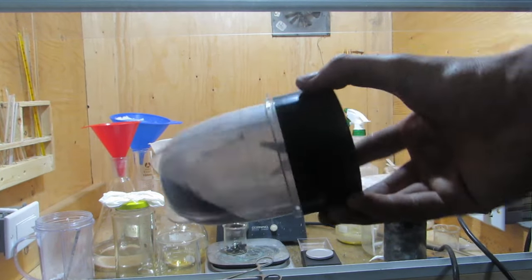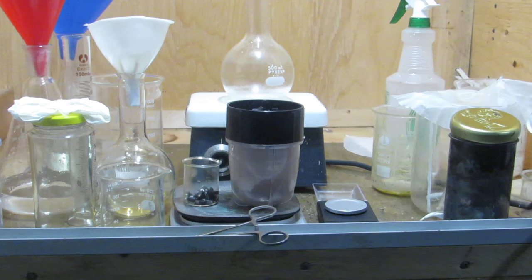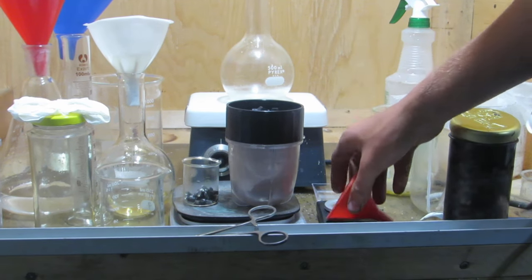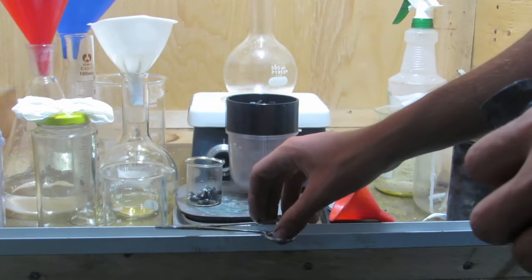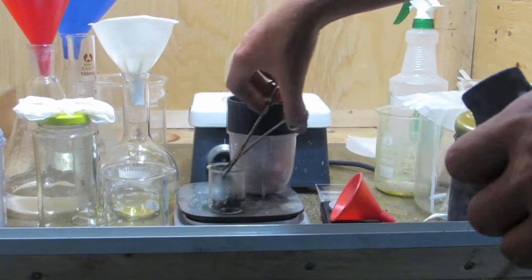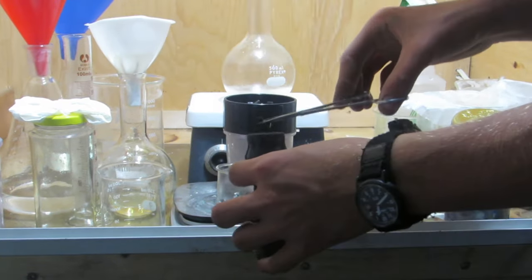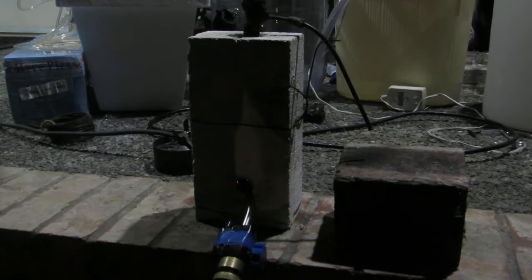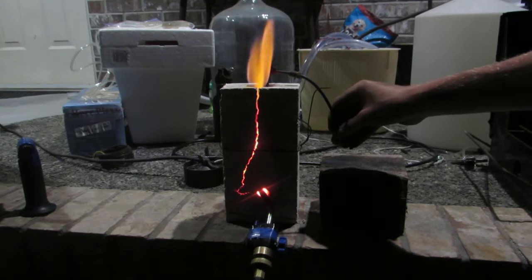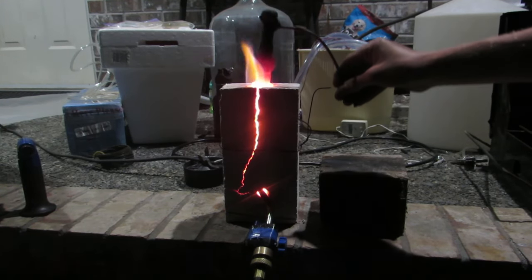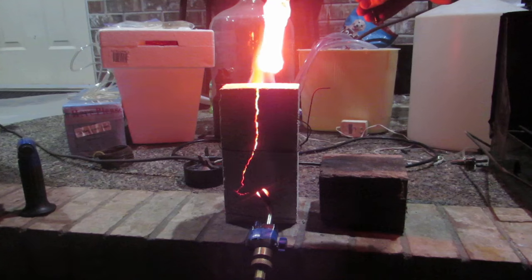To reduce the yttrium chloride to yttrium metal, 4.3 grams of lithium metal was weighed out, which I show how to prepare in a previous video. The yttrium chloride and lithium pieces were alternately added to a steel retort, placed in a hollowed out refractory brick, and heated until everything was glowing white. It was held at this temperature for around 30 minutes to ensure that everything reacts.